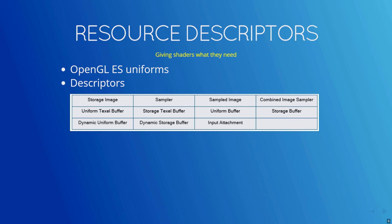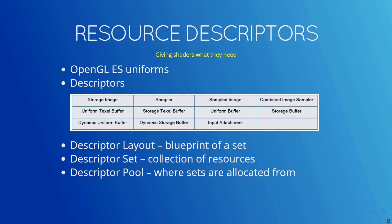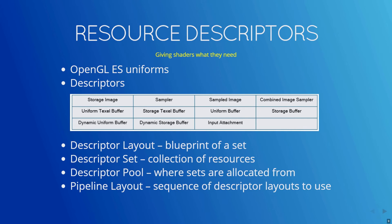Your shader will access descriptors within a set. A descriptor layout describes the overall content of the descriptor set without specific reference to any of its actual resources — it's a blueprint for building the descriptor set. A descriptor set is a collection of bindings which map the actual descriptors to your shader. In your shader, you'll have a layout statement which connects a set and binding number to the actual shader variable. You'll allocate these sets from a descriptor pool. Finally, there's a pipeline layout, which is a sequence of descriptor layouts describing the sets that are referenced by the shaders in a pipeline.